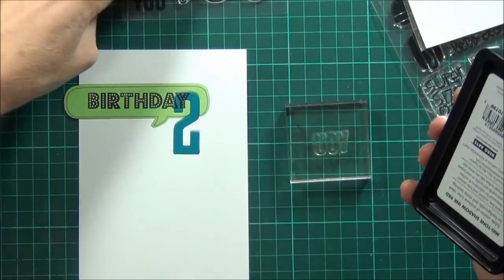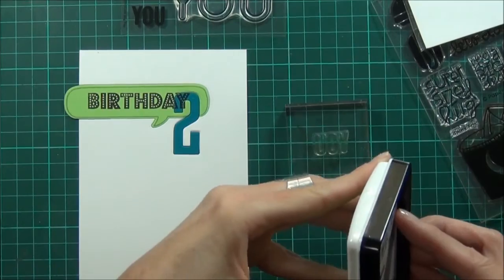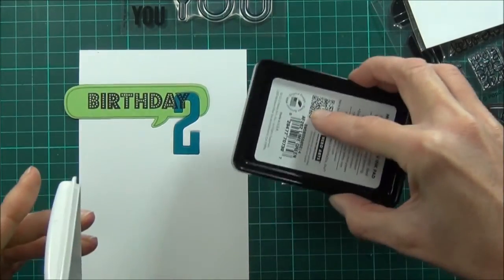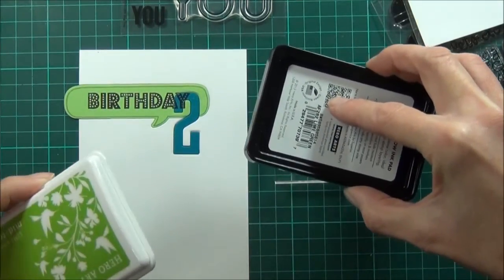So I decided on the smaller U from the Big U stamp set from Simon Says Stamp, and I've got some lime green ink.